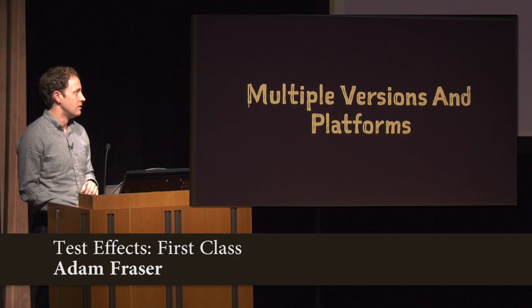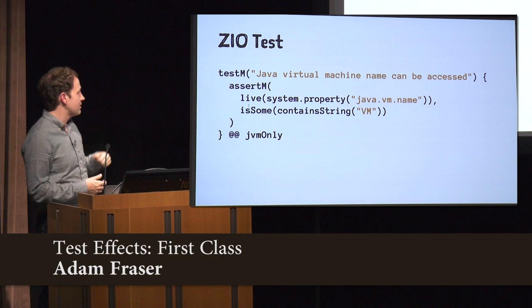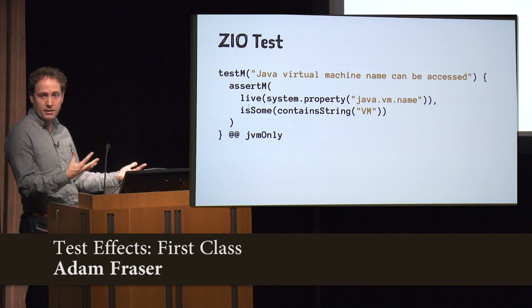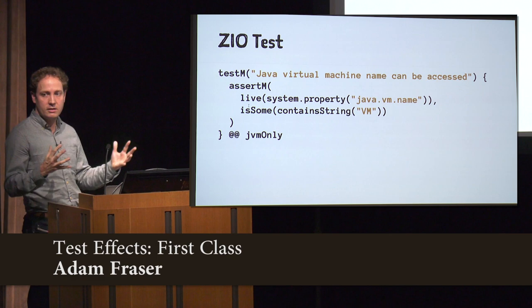Finally, we talked about multiple versions and platforms. There's a test aspect for that too. We've got JVMOnly, which will treat the test as ignored if it's not on the JVM and run it on the JVM. And we've got a bunch of varieties — running on a platform, running on everything except a platform — making it very easy for you to solve that problem.